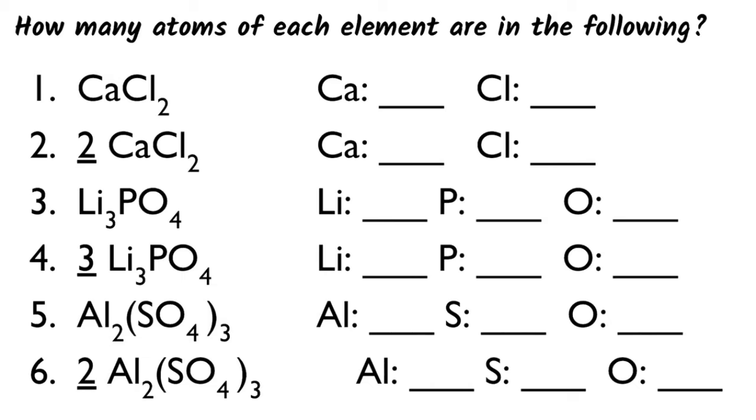So I would like you to try and go through and do as many of these practice problems as possible. There are six chemical formulas. I've broken down which elements are in each formula, and you are going to see if you can figure out how many atoms of each element there are, keeping an eye on the fact that some of them have coefficients and some of them do not.